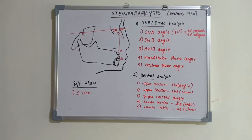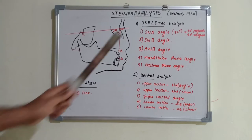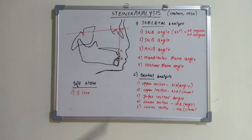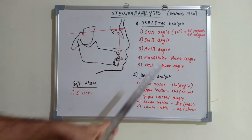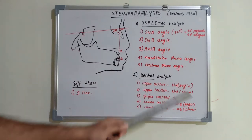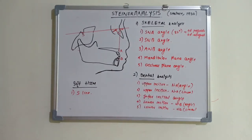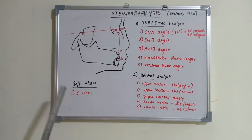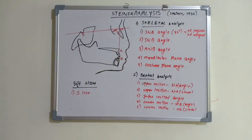Steiner's analysis has different skeletal and dental parameters, along with a soft tissue analysis. The skeletal analysis includes: SNA angle, SNB angle, ANB angle, mandibular plane angle, and occlusal plane angle. The dental analysis includes upper incisor to NA angle and linear measurement, inter-incisal angle, lower incisor to NB angle and linear measurement, and also a soft tissue S-line.